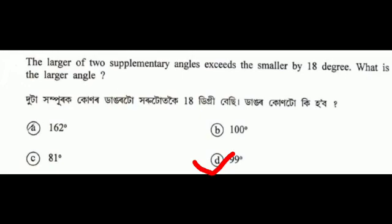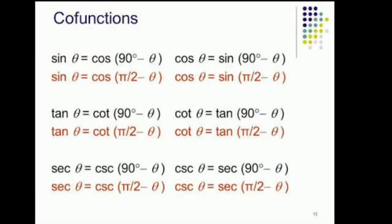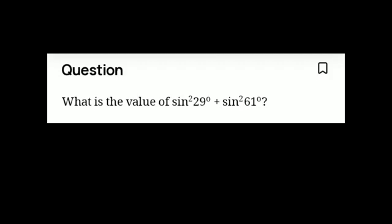Next question on trigonometric identities: sin(90° − θ) = cos θ; cos(90° − θ) = sin θ; cot(90° − θ) = tan θ; tan(90° − θ) = cot θ. Next question: what is the value of sin²29° + cos²61°?